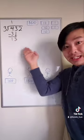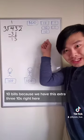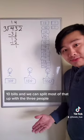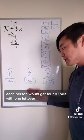In total, we would have thirteen ten dollar bills because we have this extra three tens right here. Now we have thirteen ten dollar bills, and we can split most of that up with the three people. Each person would get four